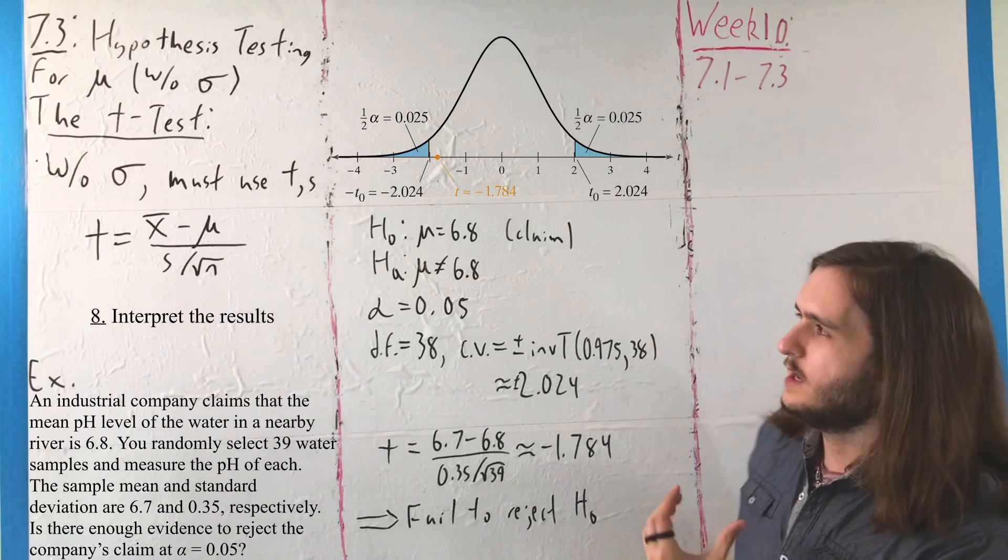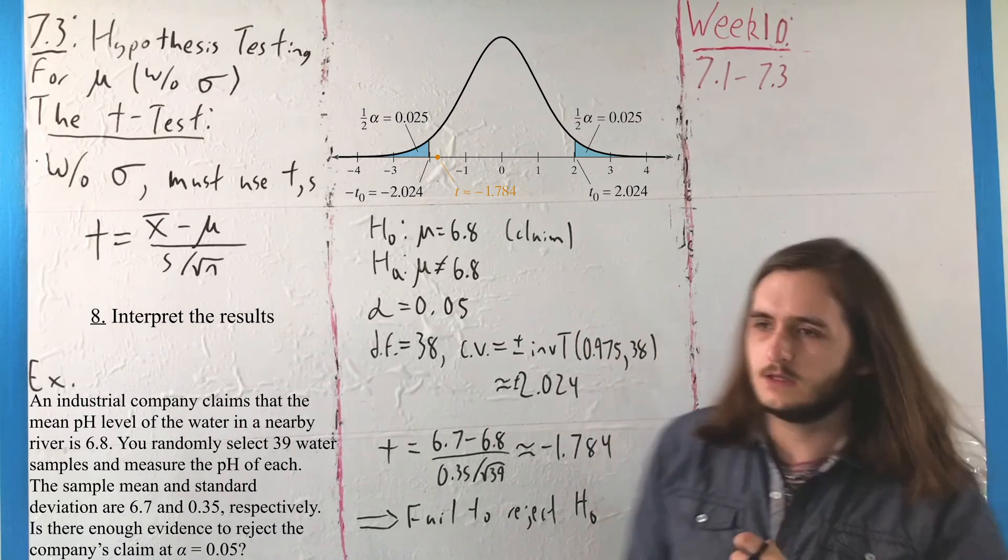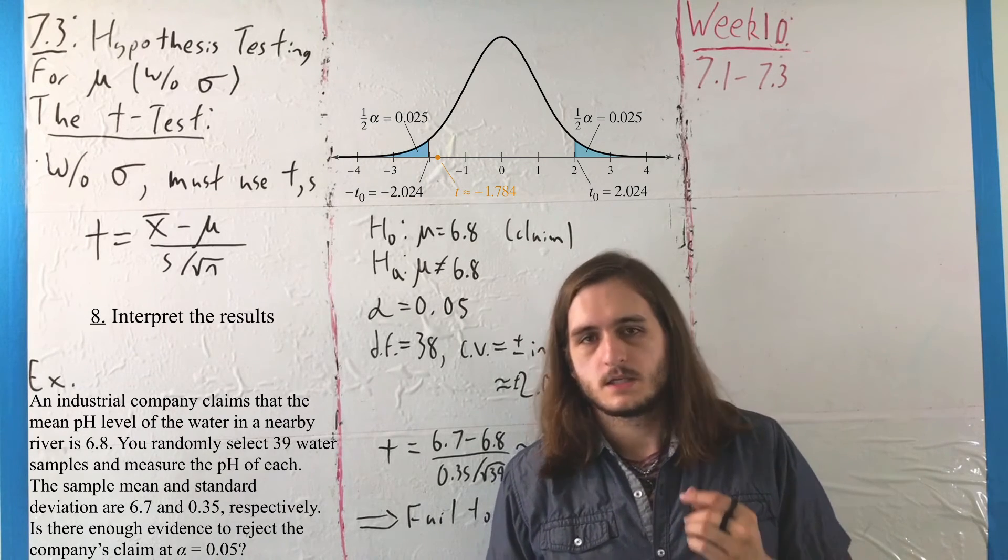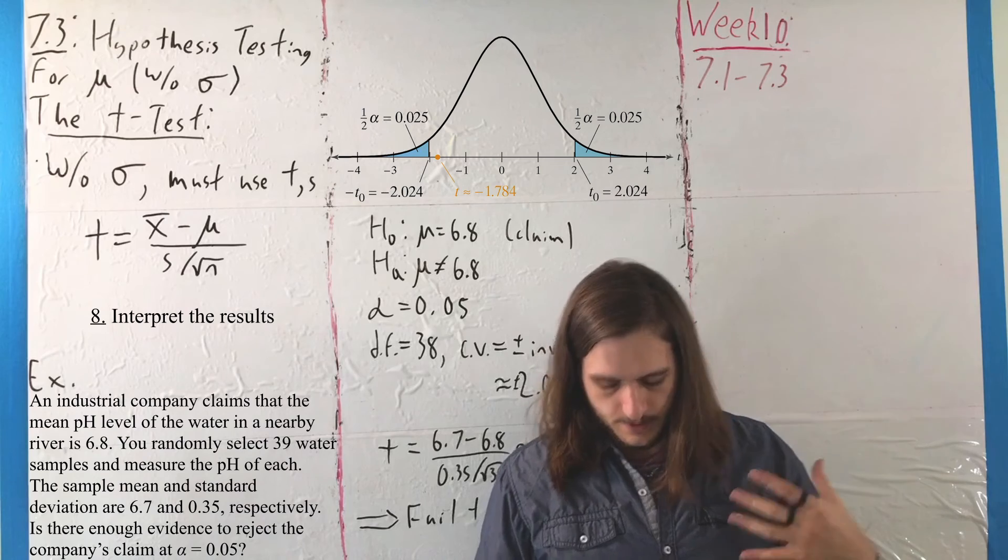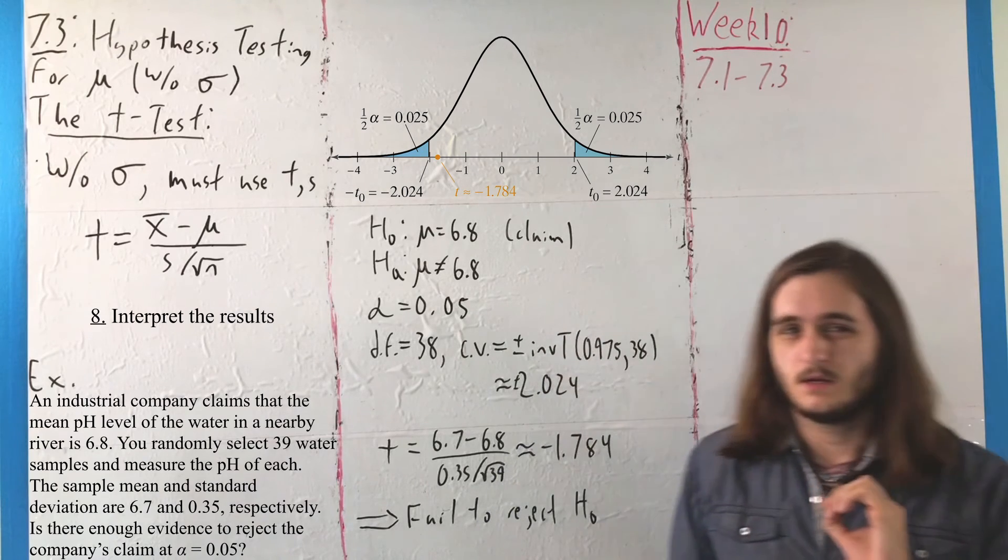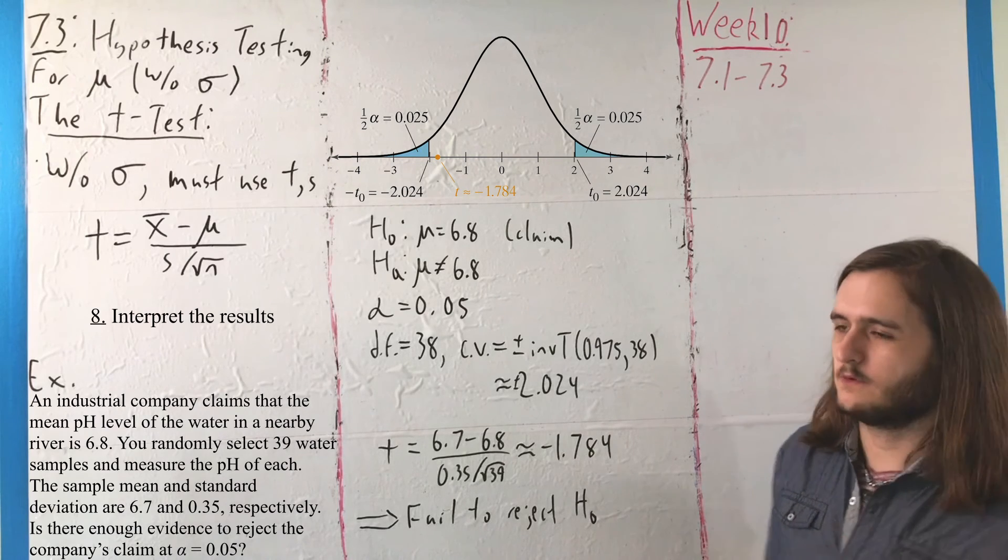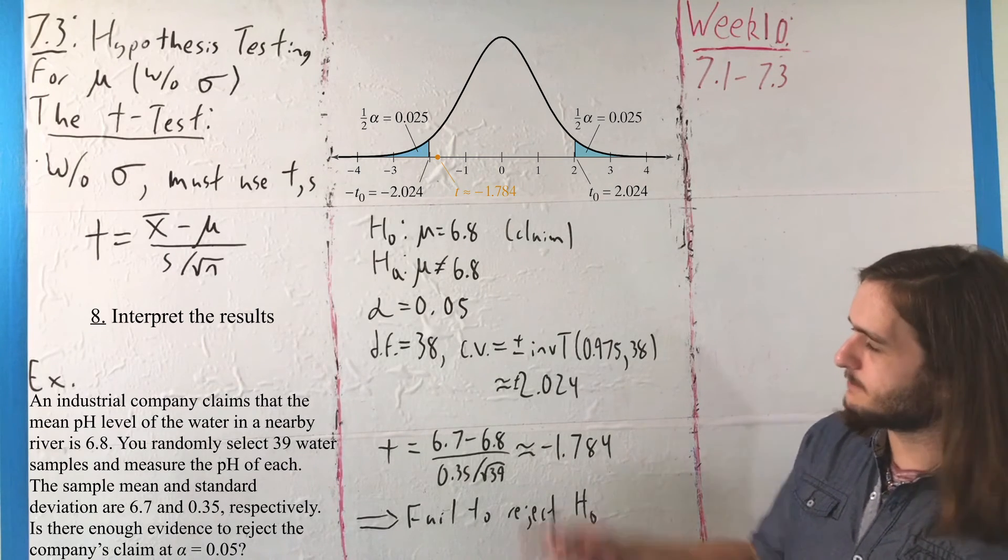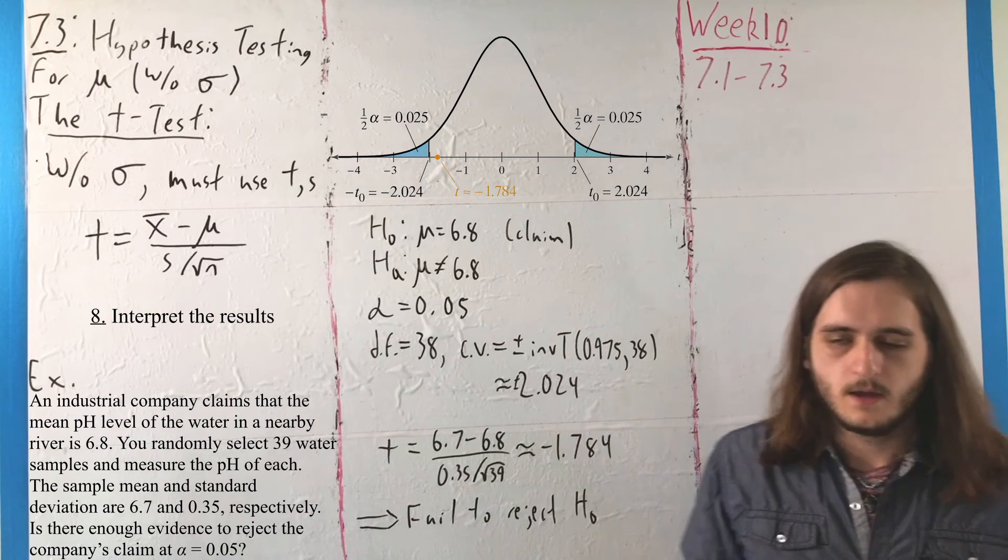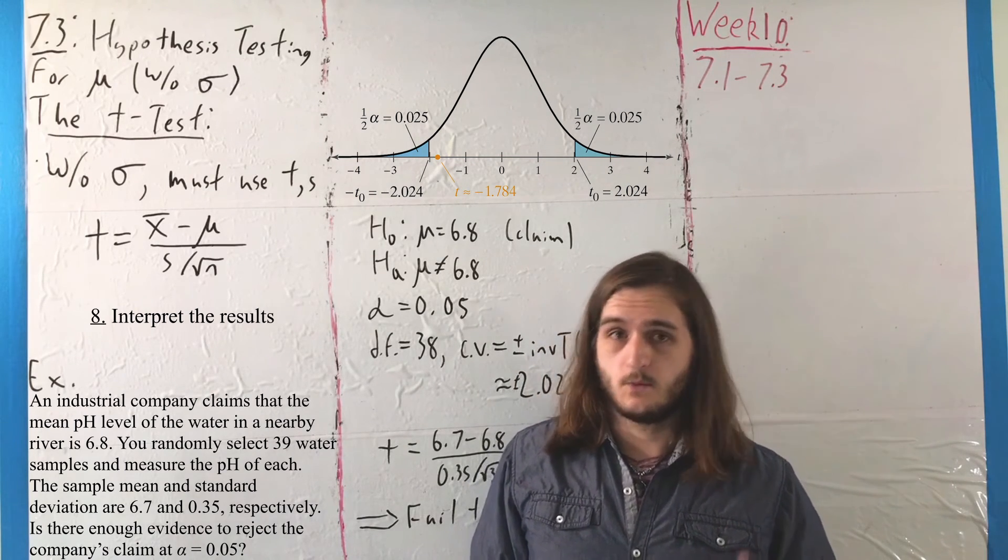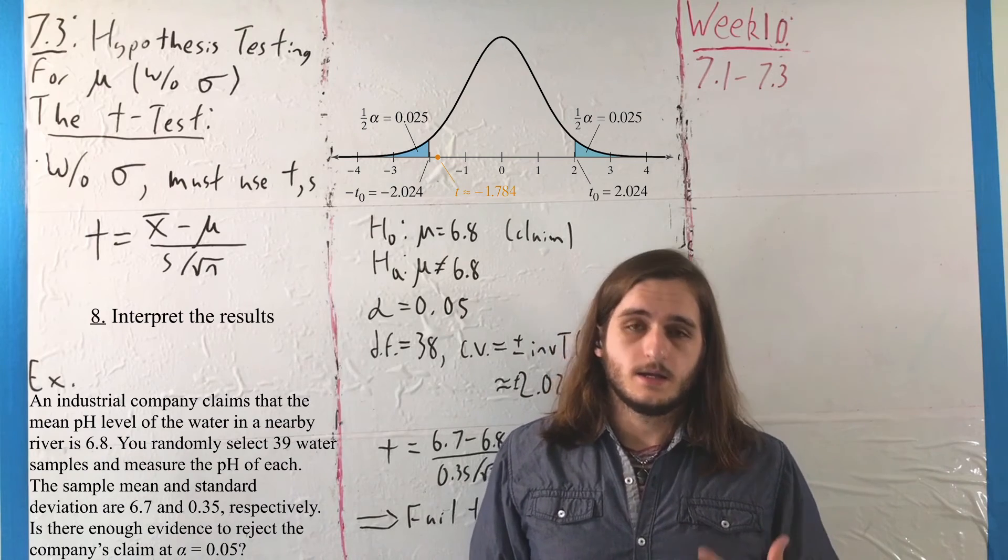Now, when it comes to rejecting a claim directly in this way, there is a little bit of leeway in terms of how we want to read that. Sometimes you can also read that as saying there is evidence to support the claim, but it's a little murkier with this sort of distinction there. More often when we're making that type of statement, it's dependent on our alternative being the claim. But, just be careful about what you're looking for there.